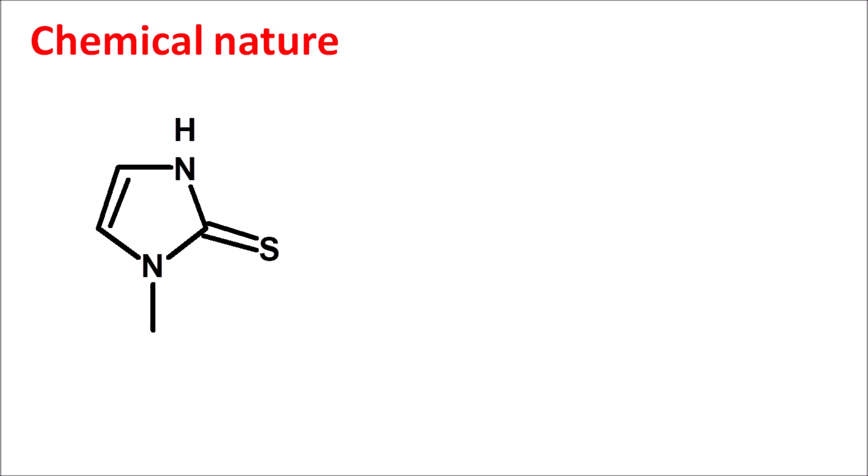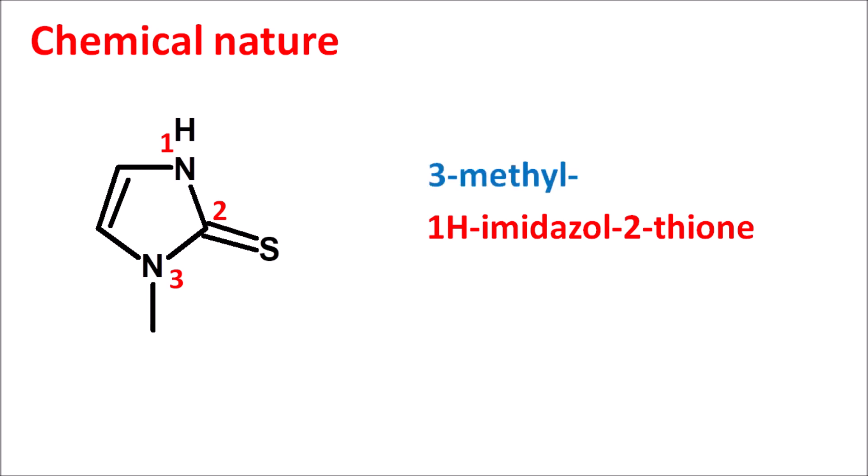Let us start with the chemical nature of this drug. Looking at the simple structure of methimazole, we can observe the imidazole nucleus. Giving the numbering 1, 2, 3 — methimazole is a 1H-imidazole-2-thione derivative, with a methyl group at the third position. So it is named 3-methyl-1H-imidazole-2-thione.